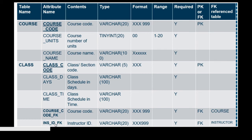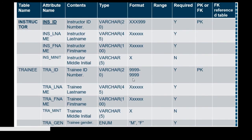For the instructor table, we have the instructor ID with its data type and contents, and it is the primary key. Now let's go to trainee. The trainee has a trainee ID number as the primary key, and the other attributes are also listed. As you can see, we use ENUM for male and female for the gender attribute of the trainee.